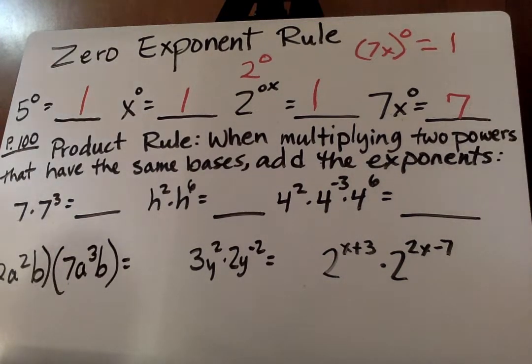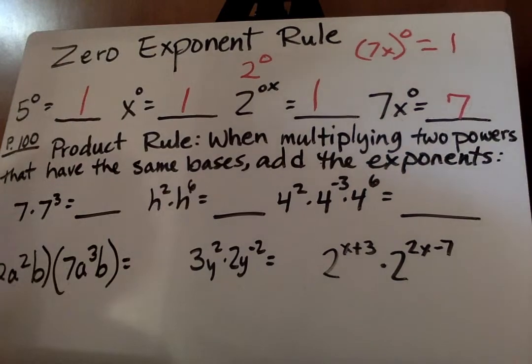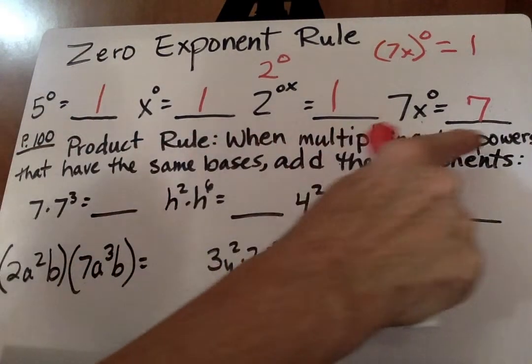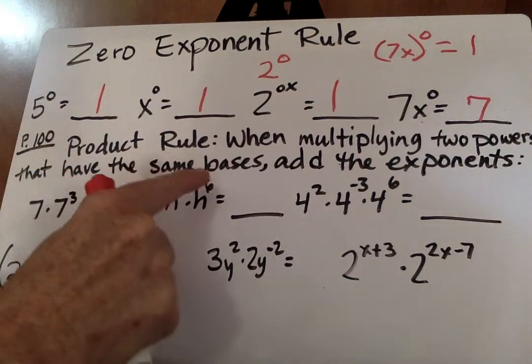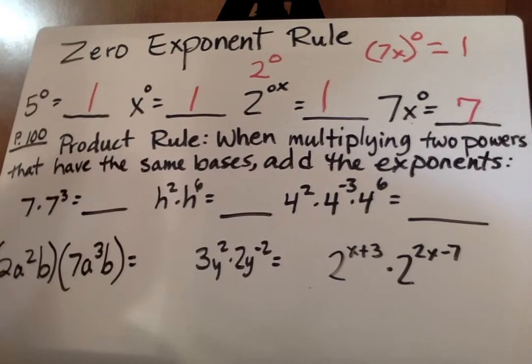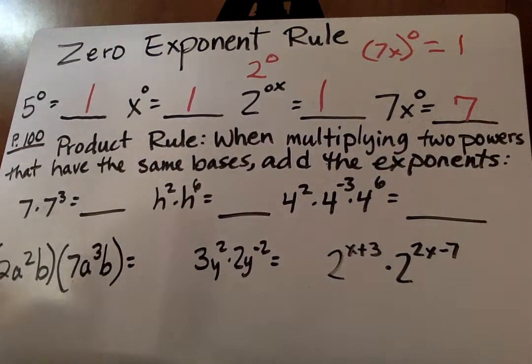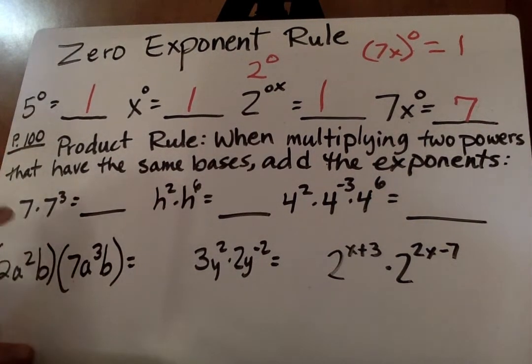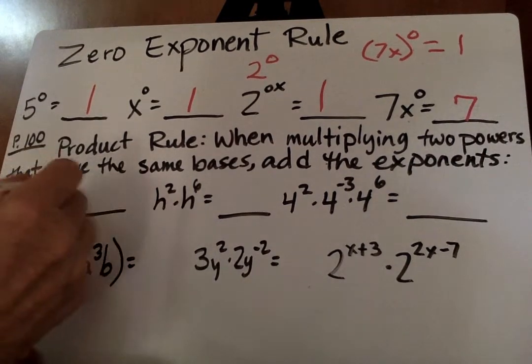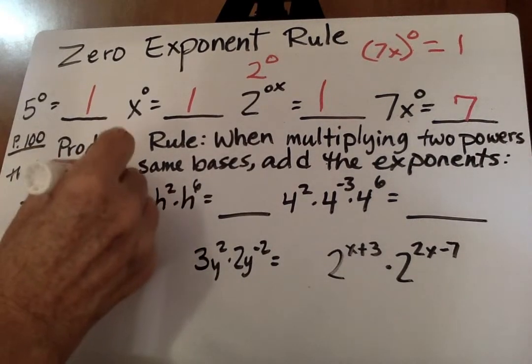We're going to go ahead and go on to the next page, page 100, to our product rule here. So our product rule says, when multiplying two powers that have the same bases, we add the exponents. So 7 times 7 to the third. If nothing is there, it's going to be a 1. So we add 1 plus 3, 7 to the fourth power.